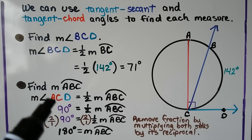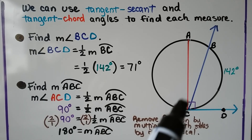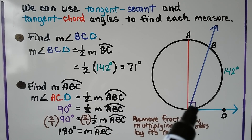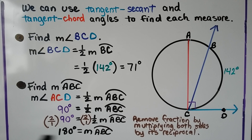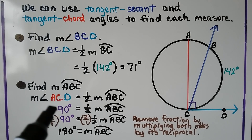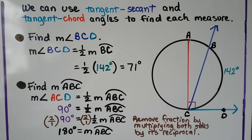We also need to find the measure of arc ABC, going all the way around. Notice there's a right angle box here, so angle ACD is 90 degrees. The measure of angle ACD equals half the measure of arc ABC. Since 90 equals half the arc, we multiply both sides by 2 — if 90 is half, then 180 must be whole. So the measure of arc ABC is 180 degrees.